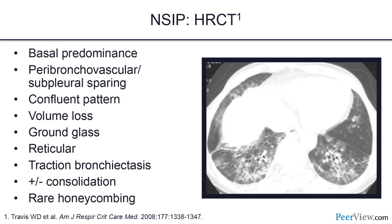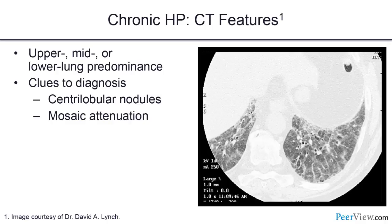Post-hoc analyses suggest that IPF patients with definite or possible UIP CT patterns behave identically in clinical trials. NSIP looks different — more ground glass, possible subpleural sparing, no honeycombing. When honeycombing is absent it could be NSIP or still UIP on histopathology. Hypersensitivity pneumonitis appears more diffuse, with ground glass, micronodules, and mosaic air trapping — clearly different from definite or possible UIP.